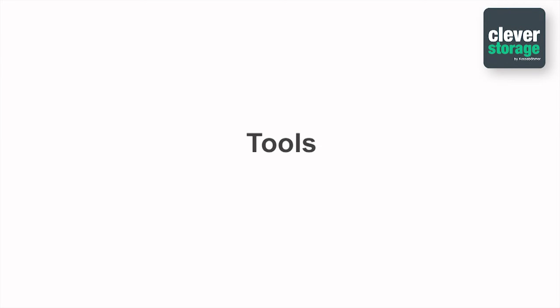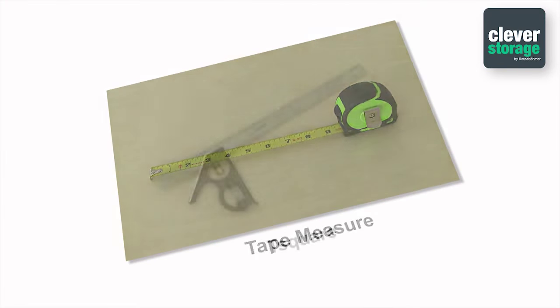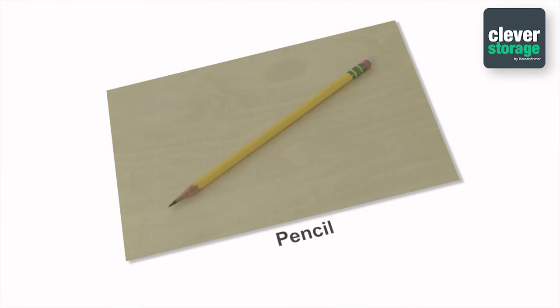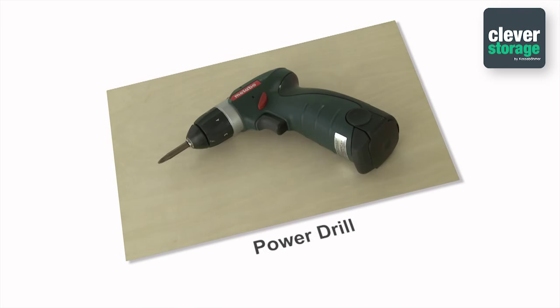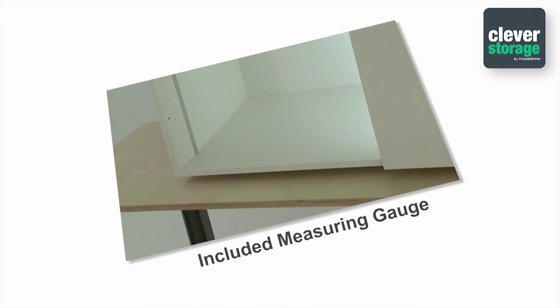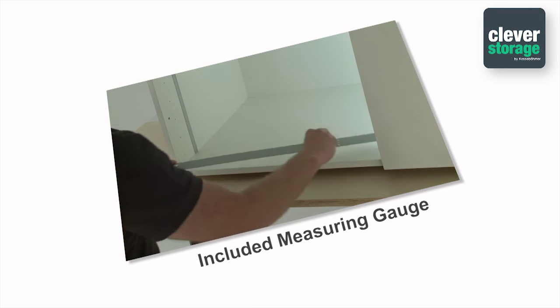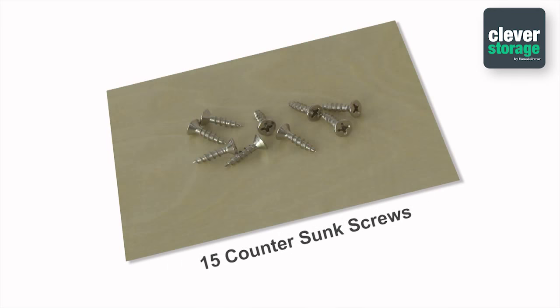The tools you will need to install the Le Mans are a tape measure, a T-square, a level, a pencil, an awl, a Phillips head screwdriver, and a power drill. If you prefer to use the included measuring gauge, you won't need a tape measure for this installation. You will also need 15 countersunk screws.